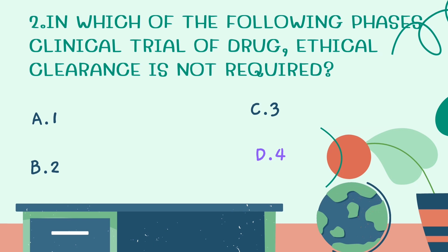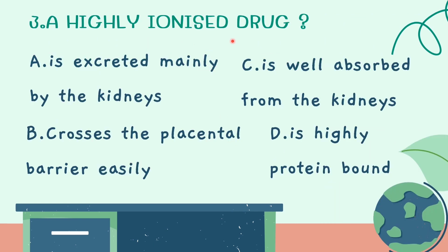Third question: a highly ionized drug - Option A: is excreted mainly by kidneys. Option B: crosses the placental barrier easily. Option C: is well absorbed from the gut. Option D: is highly protein bound. The correct answer is Option A: it is excreted mainly by kidneys. A highly ionized drug is not lipid soluble, so it cannot be reabsorbed in the tubules and is therefore excreted by the kidney.